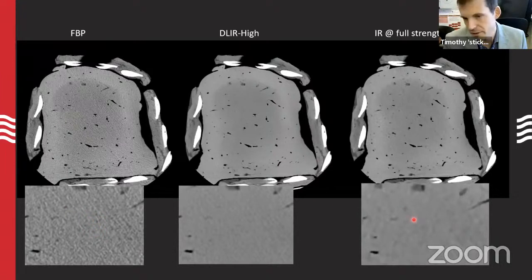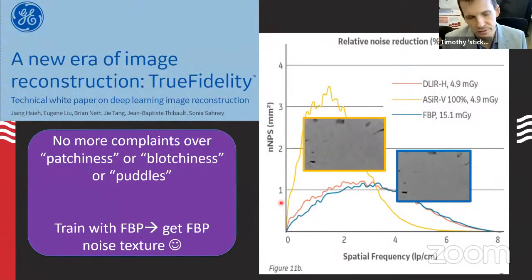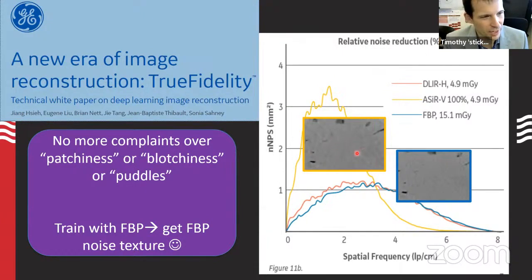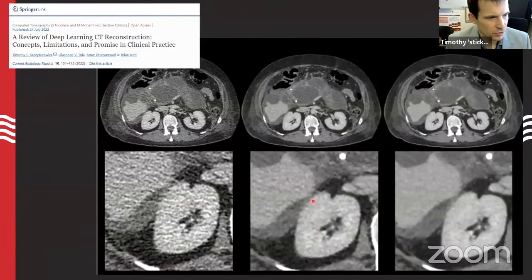On a bovine liver example: FBP has a normal noise texture; maximum IR is almost a joke image with so many pseudo lesions I'd never show it to my abdominal radiologists; and the deep learning version has an FBP-like noise texture but with lower magnitude. The noise power spectrum shows that maximum IR pushes power far to the left — lower spatial frequencies — which is where pseudo lesion complaints come from, since those length scales mimic small metastases. The deep learning method doesn't show that problem.